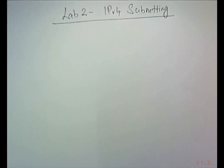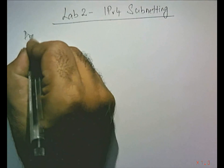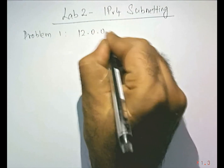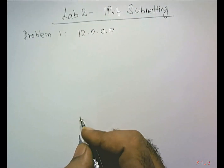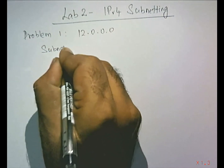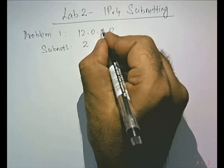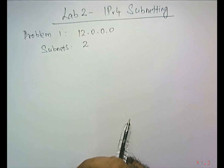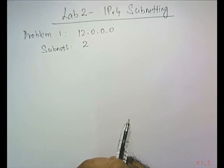Lab 2: IPv4 subnetting. In this lab we are going to solve three problems. The first problem uses network ID 12.0.0.0, and we need two subnets. For each subnet we have to find the subnet ID, the first host IP address, the last host IP address, and the broadcast IP address.